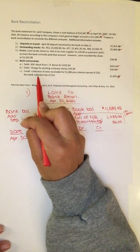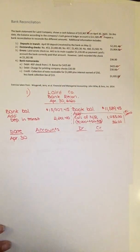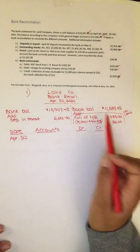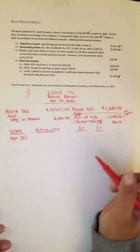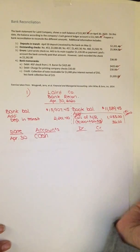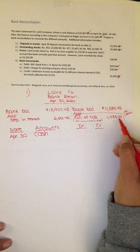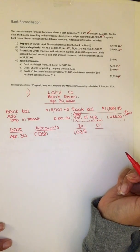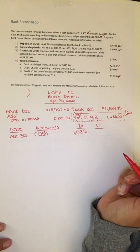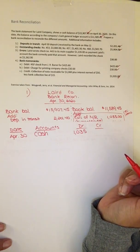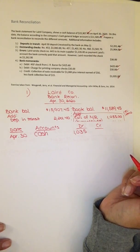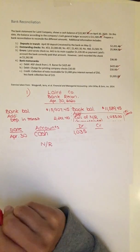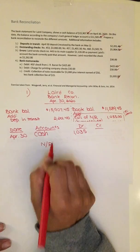We collected a note: collection of note receivable, a thousand dollars plus interest and a fee of fifteen. The nice thing is we already know what one of the accounts has to be — it has to be cash because this is a reconciliation of the cash account. If we're under the add section, we're going to be debiting cash. So we debit cash for 1,035. That's the easy piece. Why did we get this cash? A customer was paying off their account — in the form of a note receivable instead of an account receivable — so we reduce note receivable for the principal: one thousand.